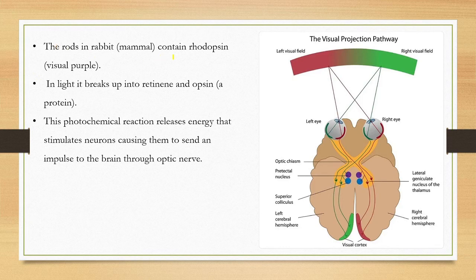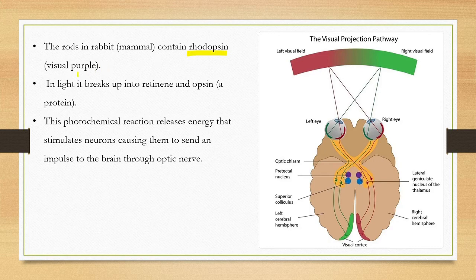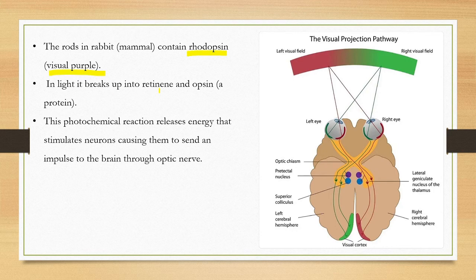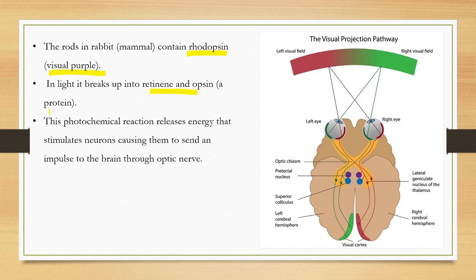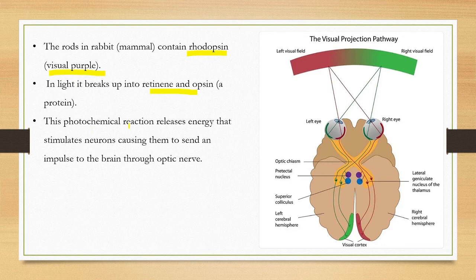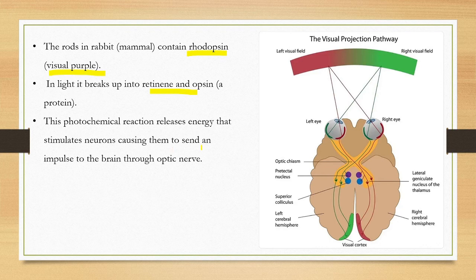The rods in mammals contain a pigment called rhodopsin or visual purple. In light it breaks up into retinine and opsin, a protein. This photochemical reaction releases energy to stimulate neurons, causing them to send impulses through neurons in the optic nerve.